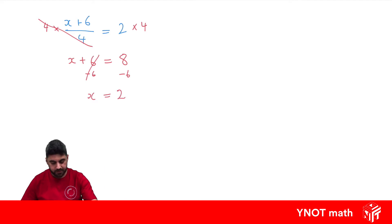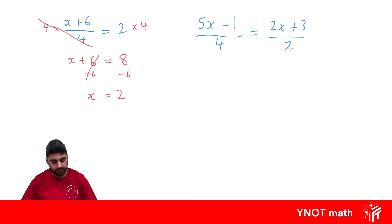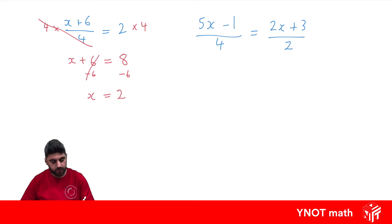What about 5x minus 1 all over 4 equals 2x plus 3 all over 2? Whenever we have a fraction equaling another fraction, we can multiply both sides by the denominator of the other one — something called cross multiplying.